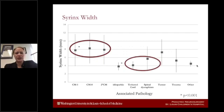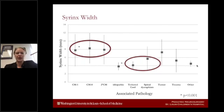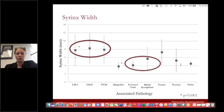Different types of syrinxes have different morphologic characteristics. Those with Chiari-associated syrinx — whether Chiari-1, Chiari-0, or a syrinx associated with a secondary Chiari such as that associated with craniosynostosis — the syrinxes themselves are wider. This is probably something that all of you have observed, versus those that occur with tethered cord or spinal dysraphism that are typically more narrow. Idiopathic syrinxes are also typically more narrow.